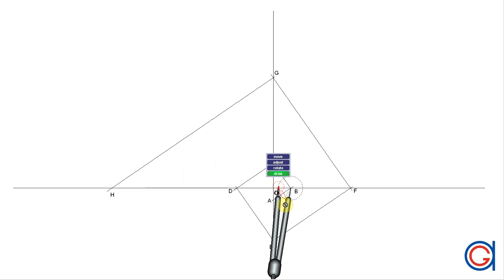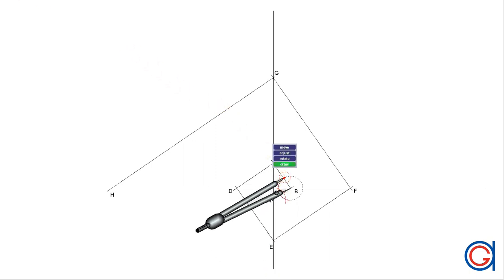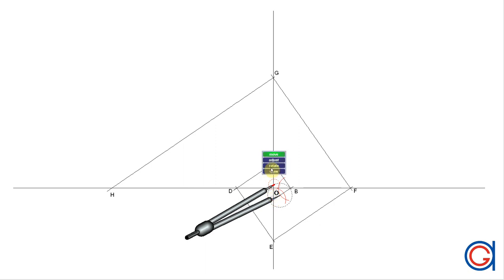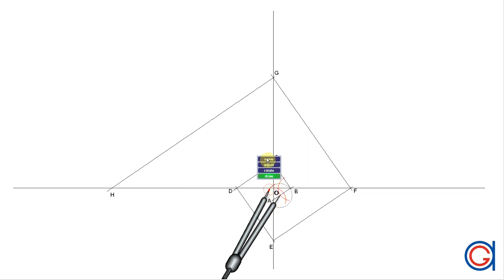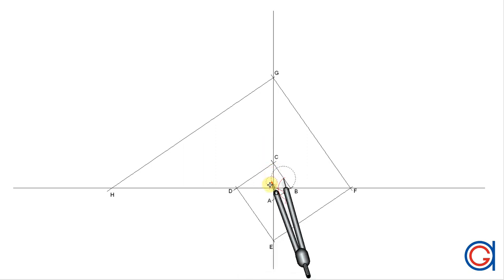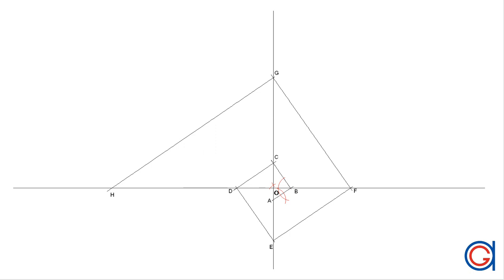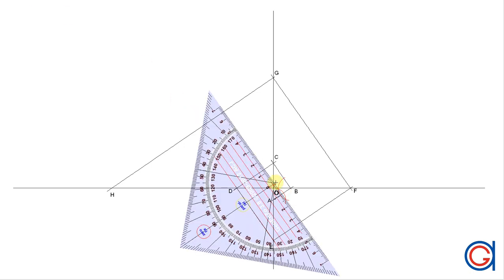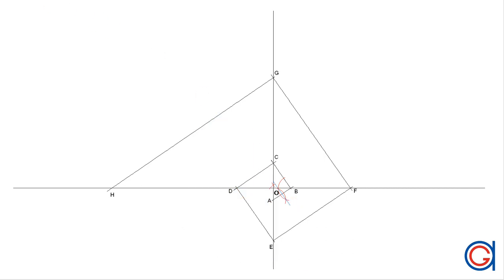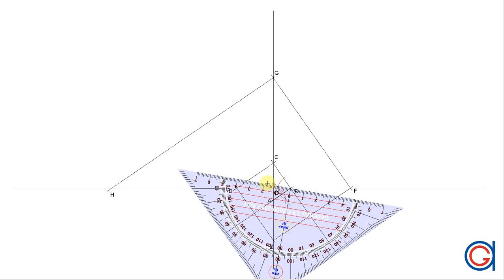Now setting the compass on point B with the same radius, we scribe another arc until it cuts the previous arc above and below the line, elongating it until it cuts the line segment BC. Where it cuts line segment AB and line segment BC are going to be the new centers for our next two arcs, which we use to calculate the angular bisector of line segment AB and the angular bisector of angle B, as shown here.